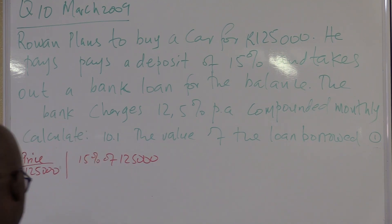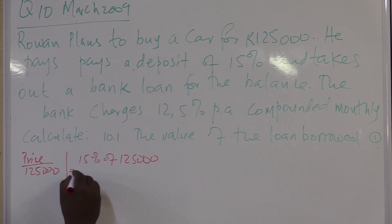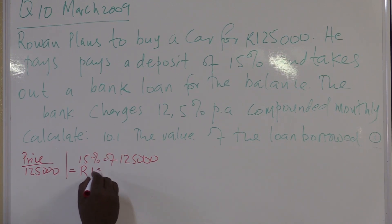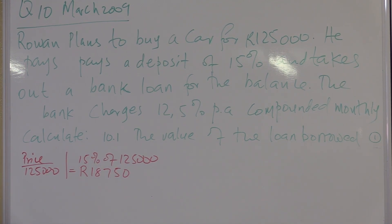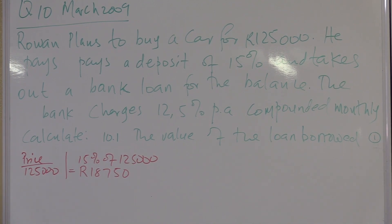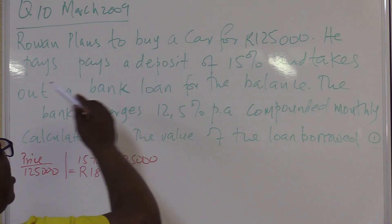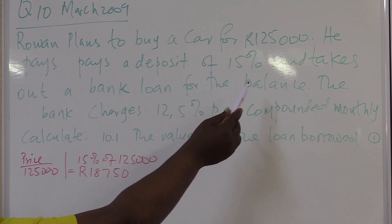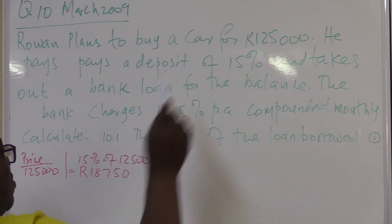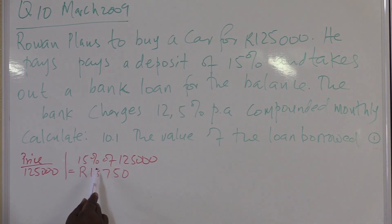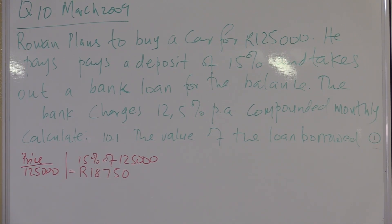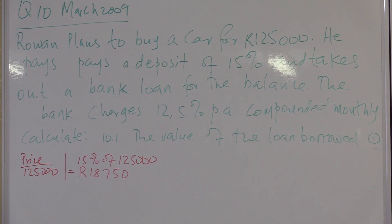15% of $125,000. It will give us $18,750. That's what he paid. So the car is worth $125,000. He pays a deposit of 15%. 15% of how much? Of that amount. So $15,000 over $100,000 times $125,000 should give us $18,750. And takes out a bank loan for the balance.